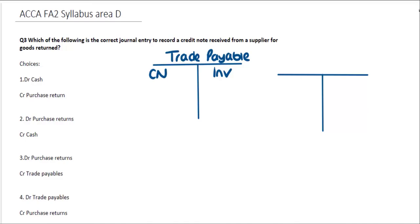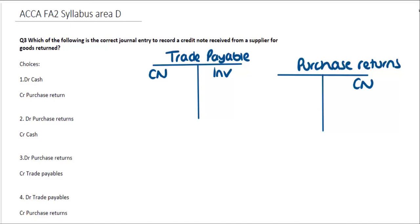If we were looking at an original invoice, we would credit Trade Payables and debit the Purchases account in the profit and loss. However, we have a credit note which reverses that entry, so we would debit Trade Payables and then credit Purchase Returns with the credit note amount.